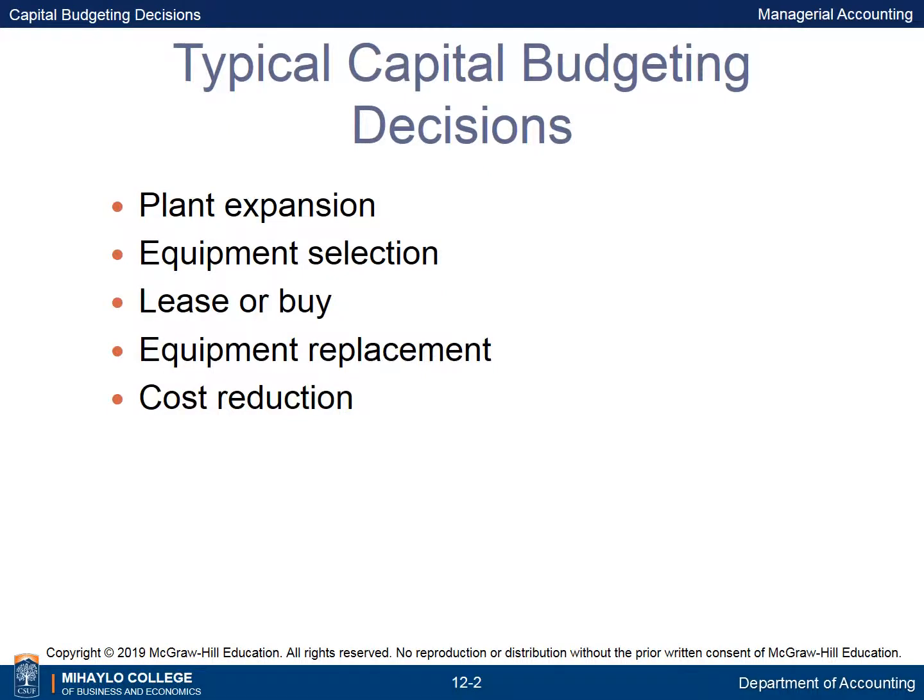Typical capital budgeting decisions include plant expansion, equipment selection or replacement, lease or buy, and cost reduction.